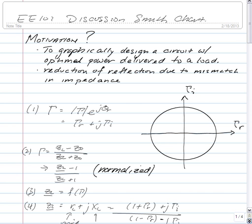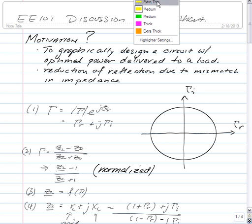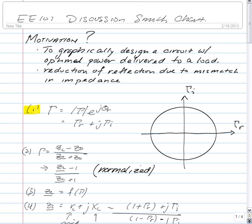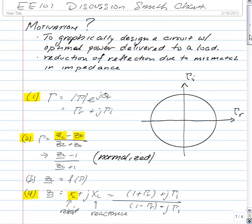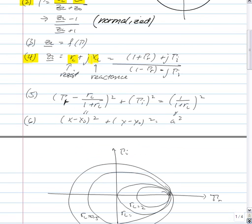So let's take a look at how the Smith chart is generated. If we look at the reflection coefficient it is in general complex and a function of your load impedance and your characteristic impedance. Now if we normalize the expression and we rearrange terms we now have a normalized load impedance that has a real part associated with resistance and an imaginary part associated with reactance.